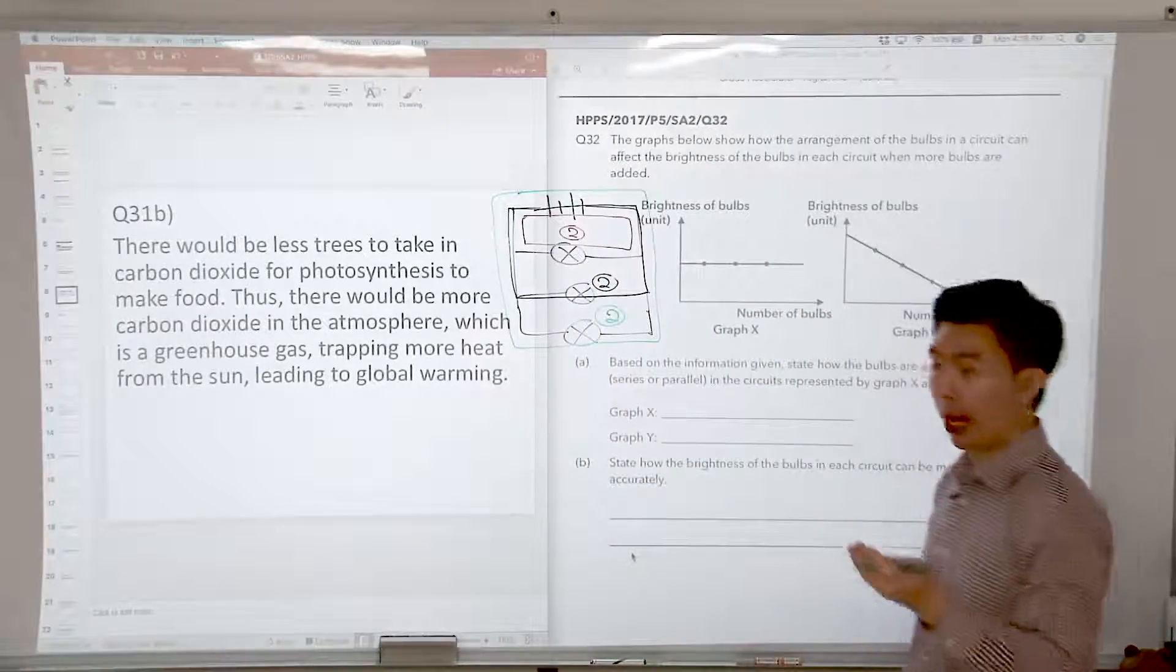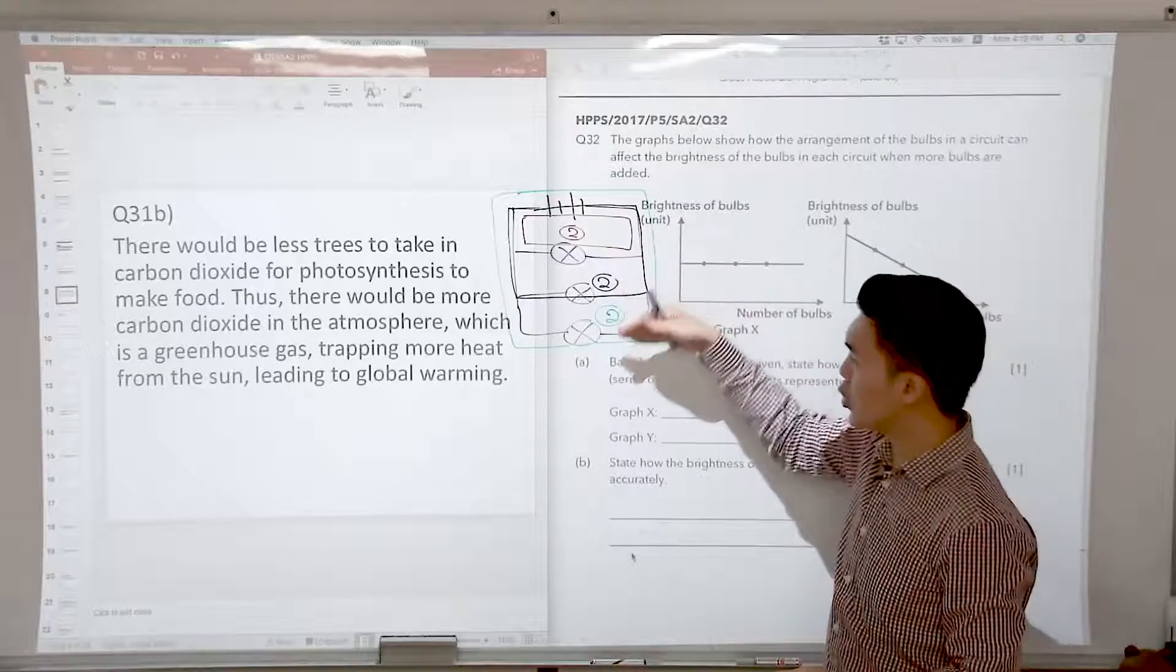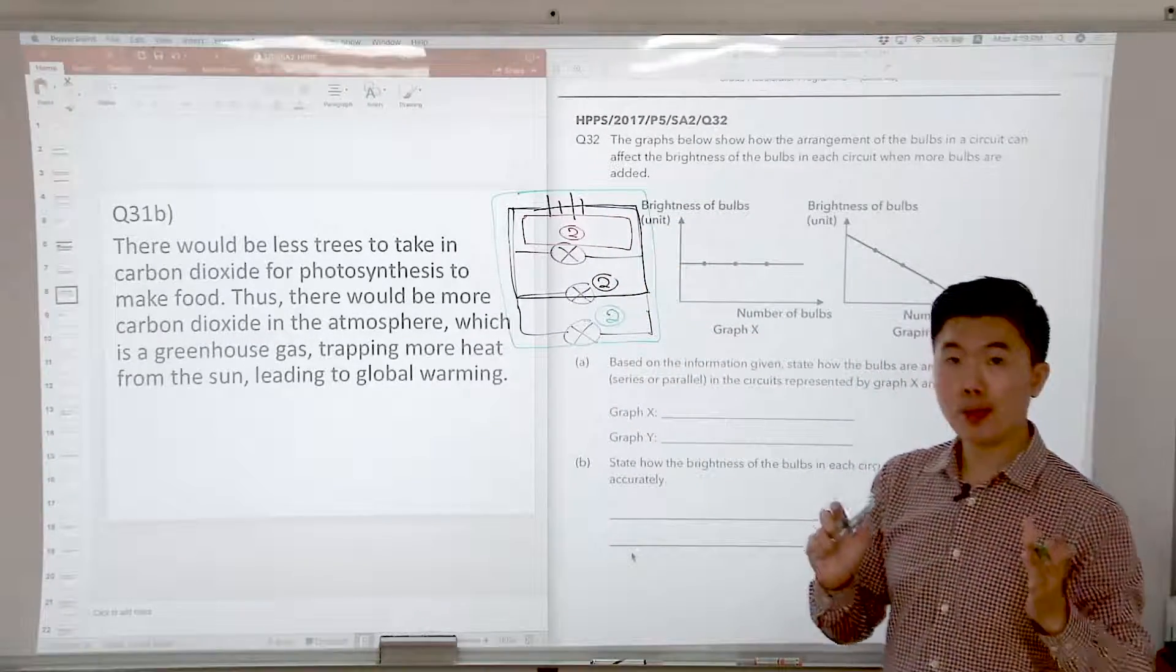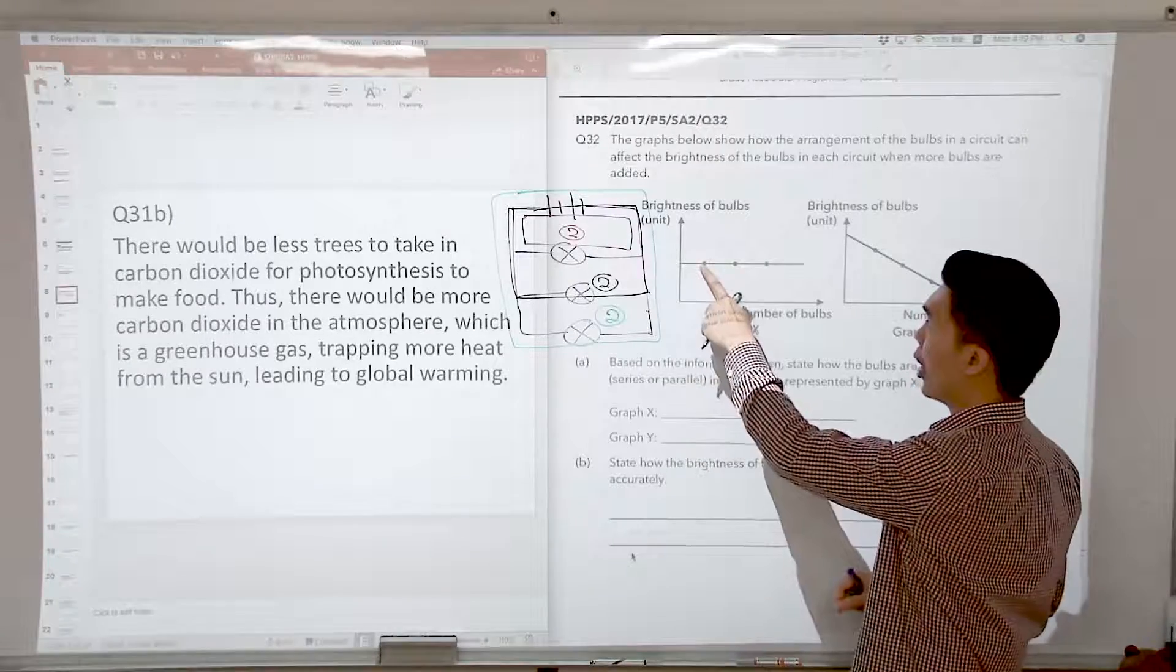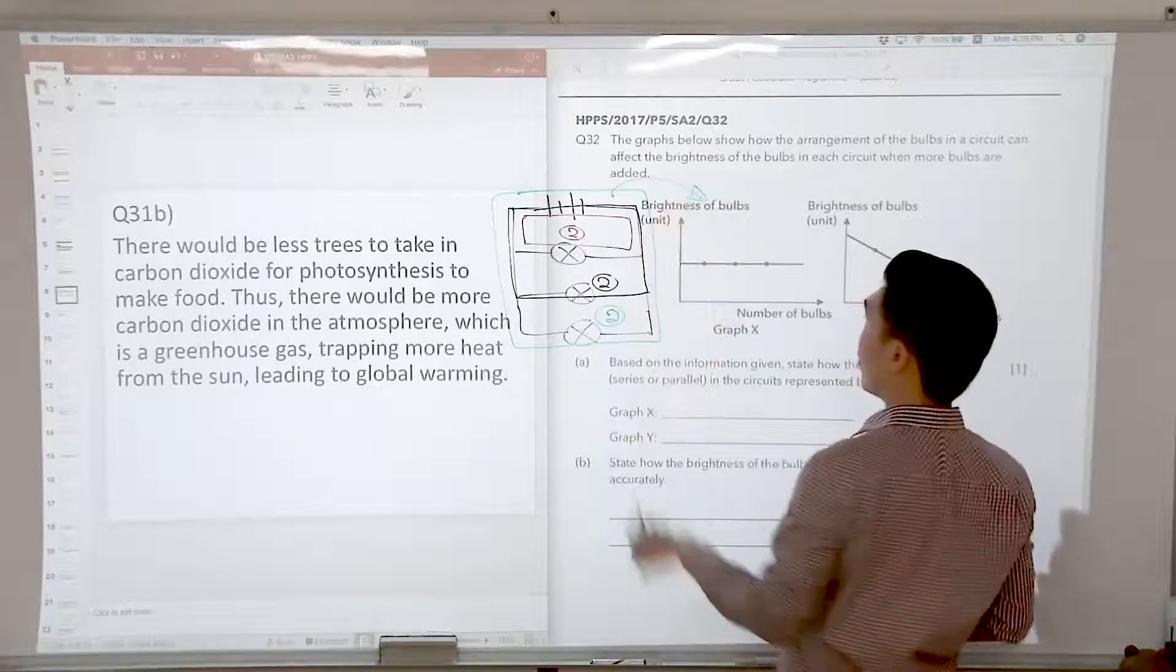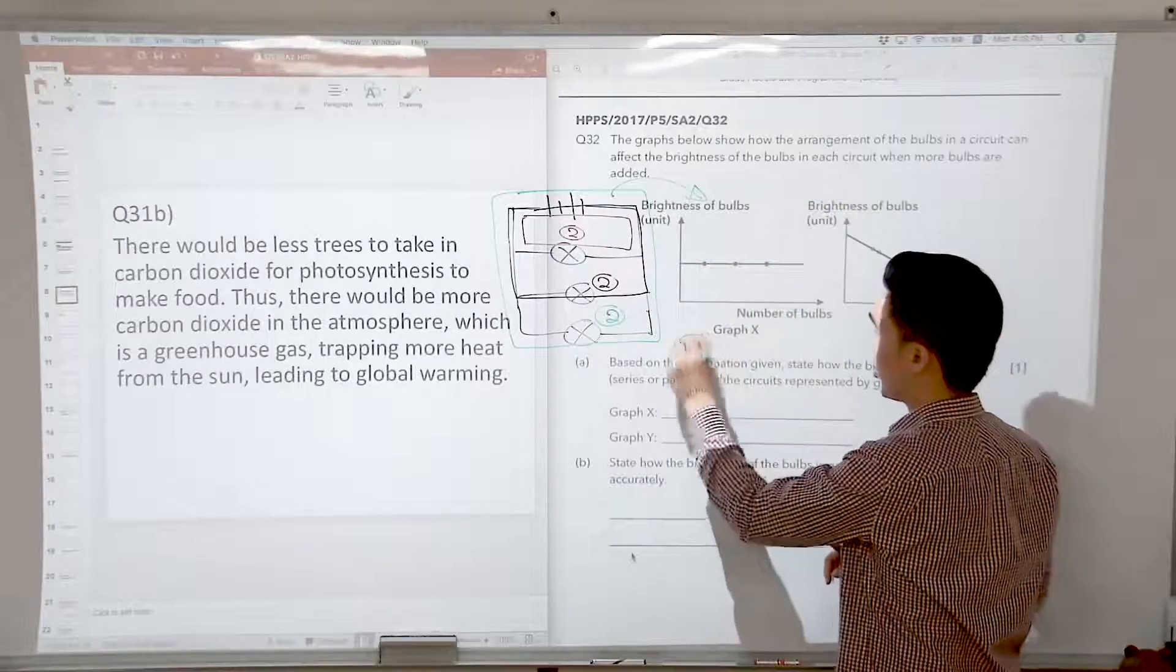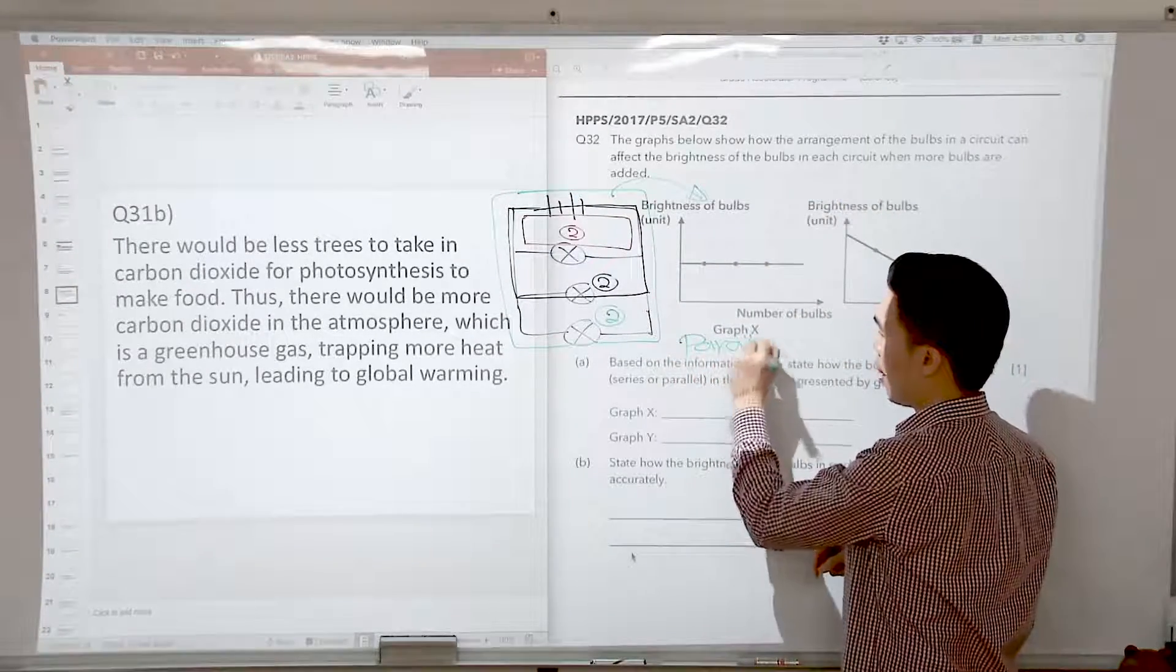So what can you tell me about the brightness of the bulb then? If the power given to each of the bulbs are the same, then the brightness of the bulbs is going to remain constant. So from here, we can tell that this graph, graph X, represents bulbs in parallel.